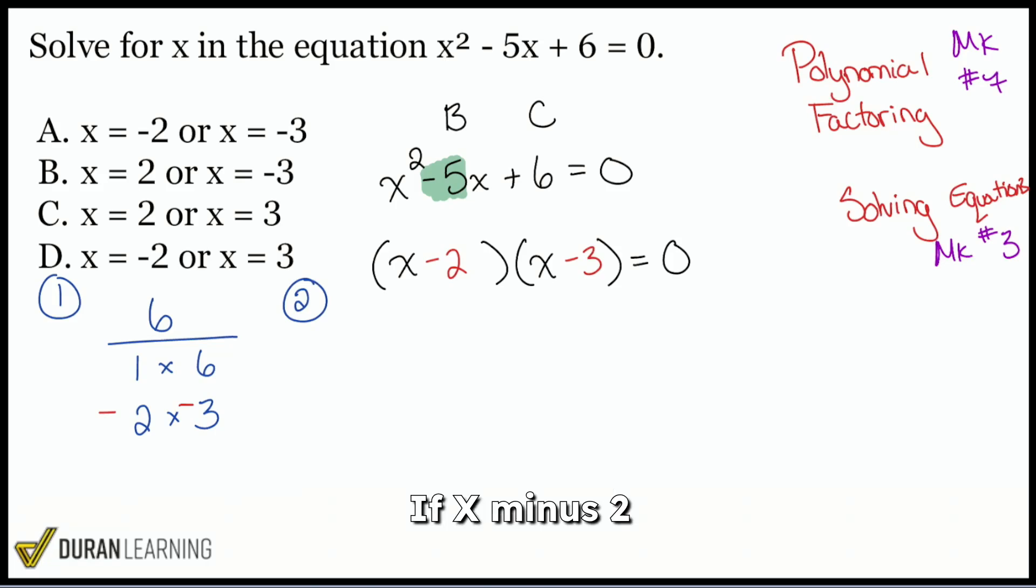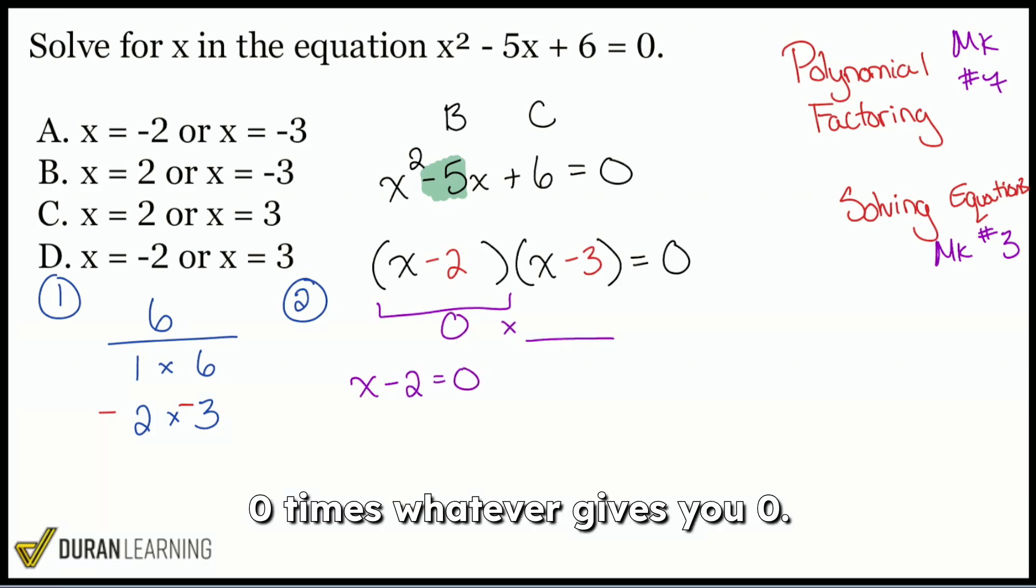So the idea that we're going to be leveraging, the idea that we're going to be utilizing is this: hey, if x minus 2 was equal to zero, then again, zero times whatever gives you zero. That's a good thing. And then if this was zero here, well, again, zero times whatever is going to give you zero.